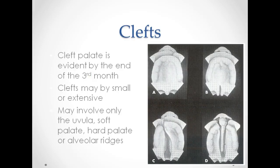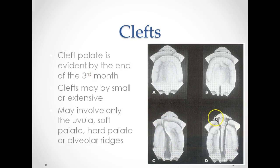Cleft palate is evident by the end of the third month. Clefts may be small or extensive, and they may involve only the uvula, the soft palate, the hard palate, the alveolar ridges, or all of these. These images show the uvula being involved, the midline and the side involving the lip and the palate, and both sides of the lip and the entire palate and the uvula.